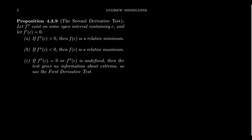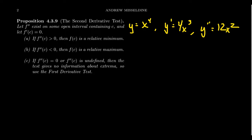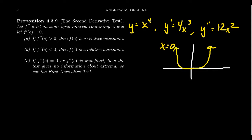To understand this better, consider three situations. First, take y = x⁴. Its first derivative is 4x³ and its second derivative is 12x². At x = 0, the first derivative is zero, so it's a critical number. The graph of y = x⁴ is like a parabola but flatter near the origin, and x = 0 is a minimum value. However, the second derivative at zero is also zero — so we got a minimum when the second derivative is zero.